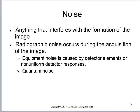Anything that interferes with the formation of the image we're going to call noise, whether that happened inside the patient or inside the imaging system. The two kinds we're most concerned with are: things that happen within the system — anything caused by the detector elements, the way the tube is functioning — and quantum noise.